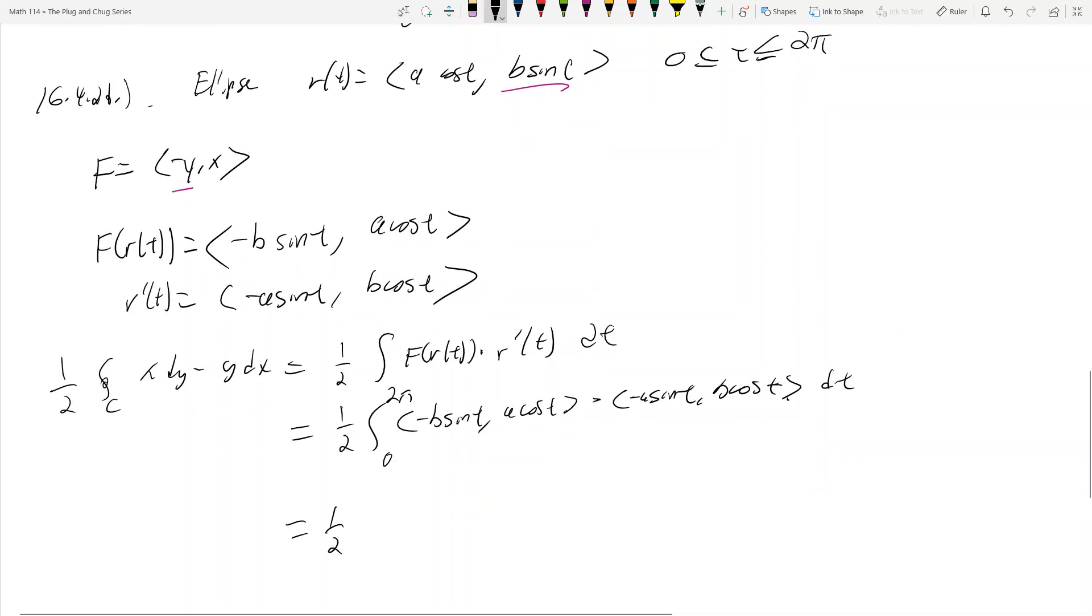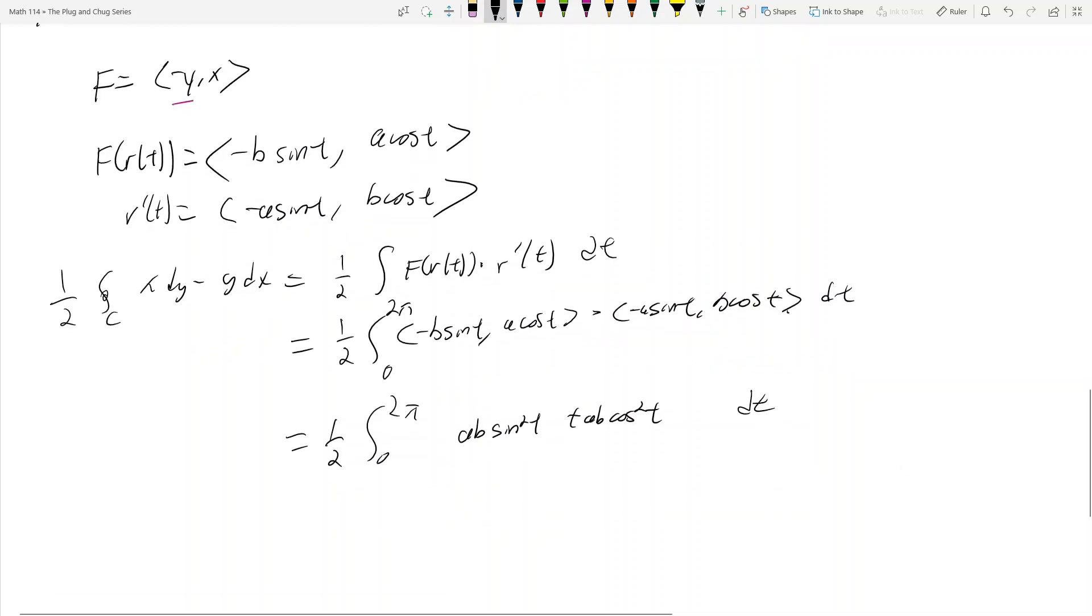So now this is 1/2 the integral from 0 to 2π of ab sin²t + ab cos²t. That's exciting because now I factor out ab, so I get ab/2.